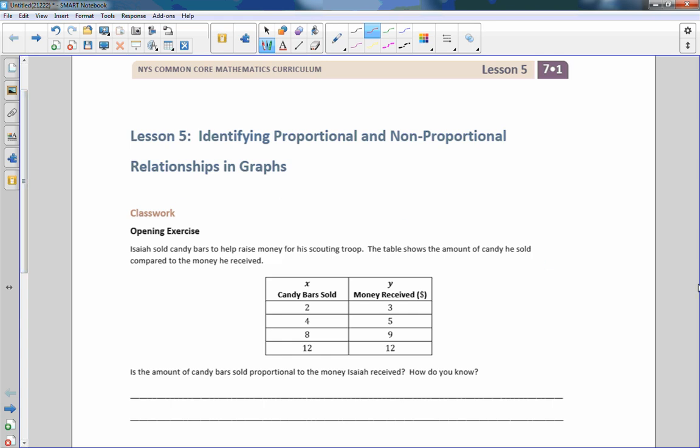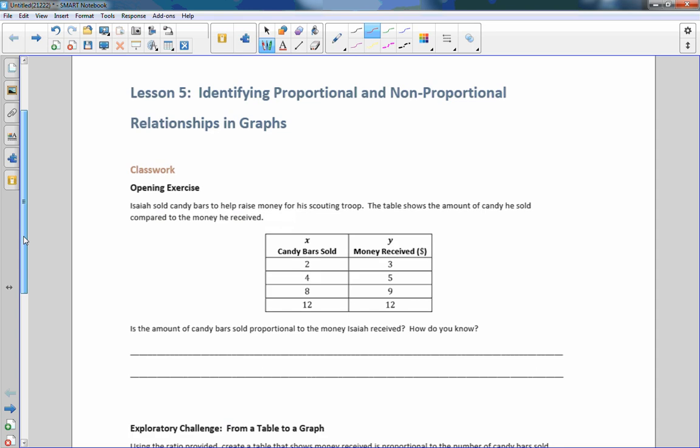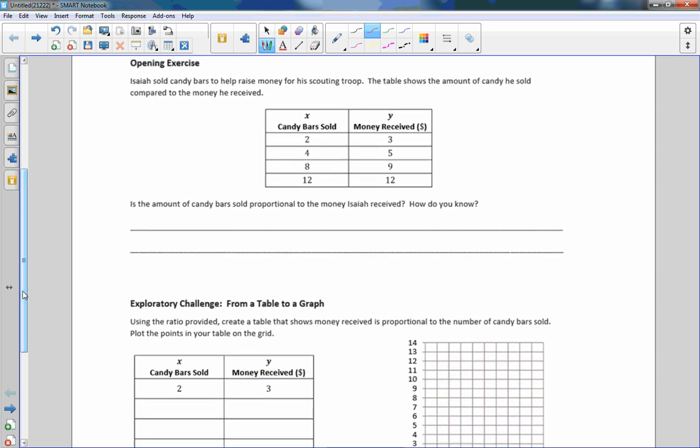The opening exercise says Isaiah sold candy bars to help raise money for his scouting troop. The table below shows the amount of candy he sold compared to the money he received. Is the amount of candy bars sold proportional to the money Isaiah received? We have a Y column and an X column, and to determine proportionality, to find the value we're multiplying X by to get Y, we have to take Y divided by X.